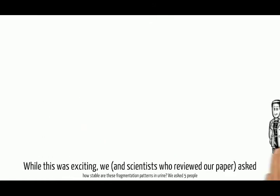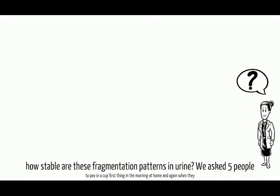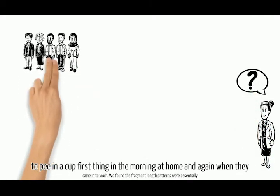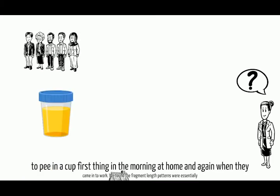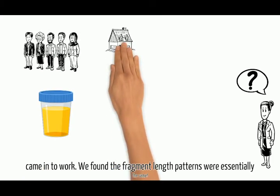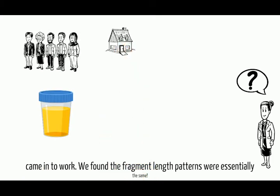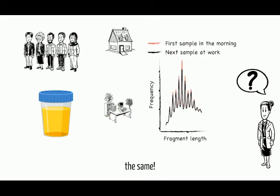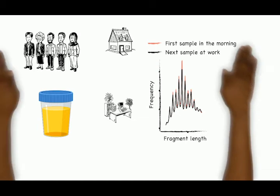While this was exciting, we and the scientists who reviewed our paper asked: how stable are these fragmentation patterns in urine? We asked five people to pee in a cup first thing in the morning at home, and again when they came into work. We found that the fragment length patterns between these two samples were essentially the same.